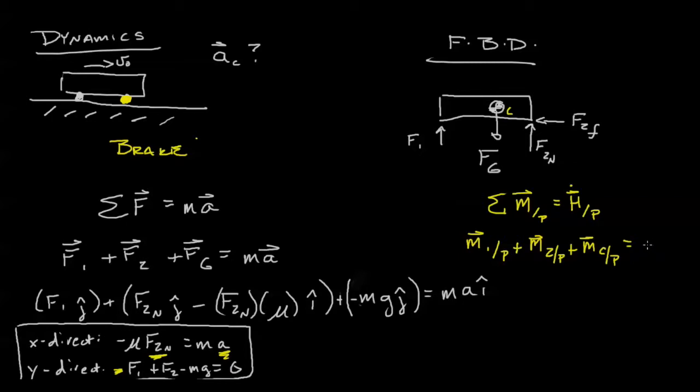And on the right hand side, we'll have the position of the center of mass with respect to P crossed with the mass times the acceleration of the center of mass. Give me a second to write down what those equations look like.